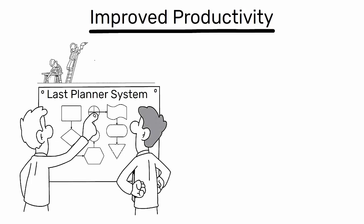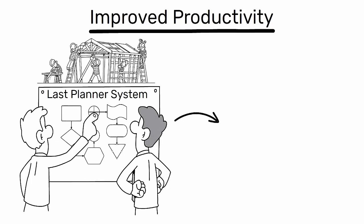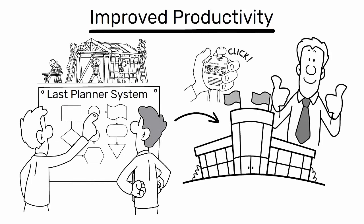Third, improved productivity. Lean tools and techniques, such as the Last Planner system, help in streamlining workflows and improving labor productivity. This leads to projects being completed on time or even ahead of schedule.